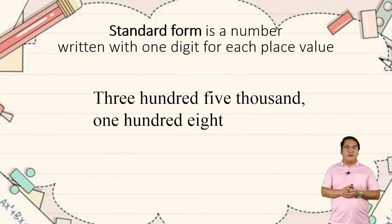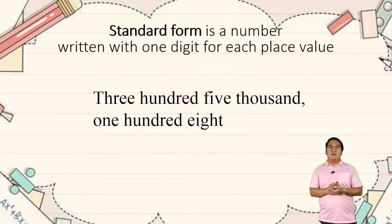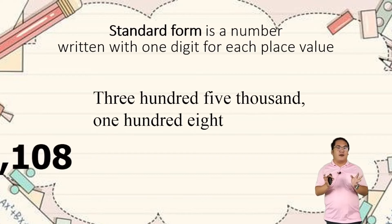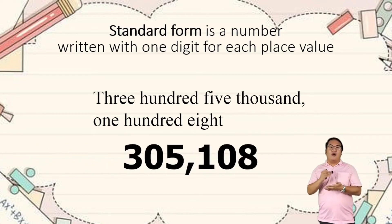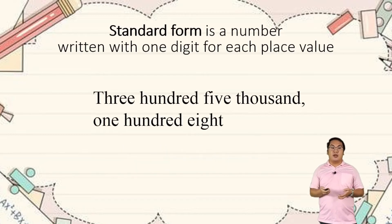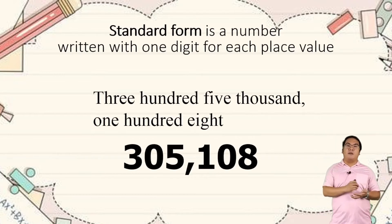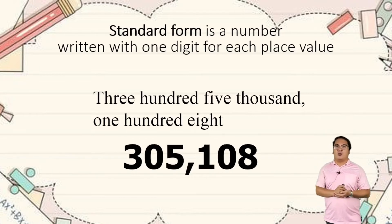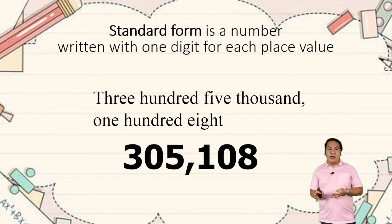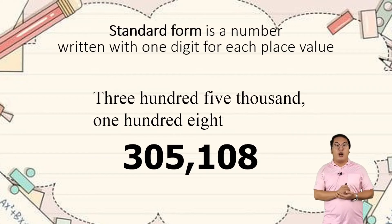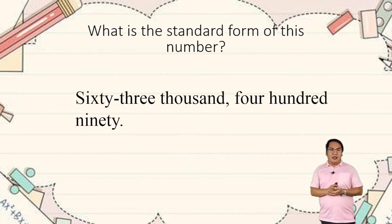Let's have the standard form. What is the standard form? It's a number written with one digit for each place value. So if we're going to have the standard form, this is the numerical or numbers that we are writing. Three hundred five thousand one hundred and eight written in words is spelling or word form. Written as 305,108, this is what you call numerical or standard form.